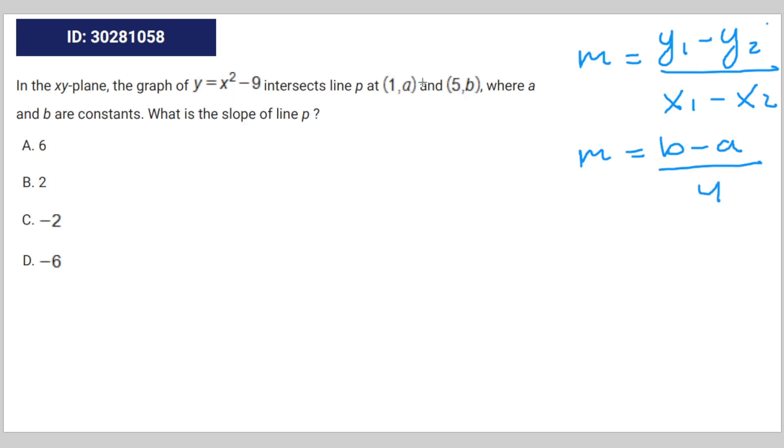To figure out what a and b are, we're going to put these coordinates into this equation. For a, that's going to be a equals 1 to the power of 2 minus 9, which equals negative 8. And for b, that's 5 to the power of 2 minus 9, which equals 16.